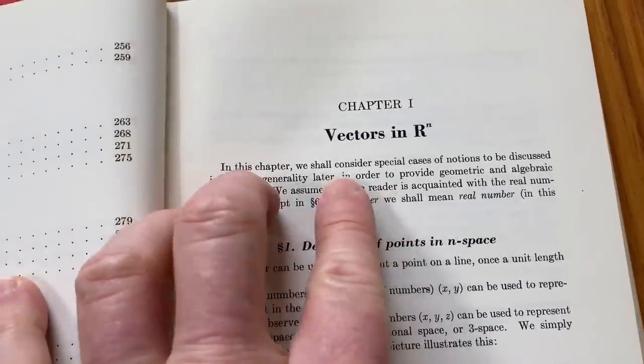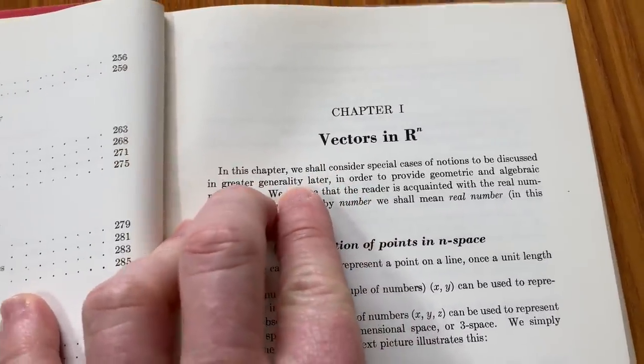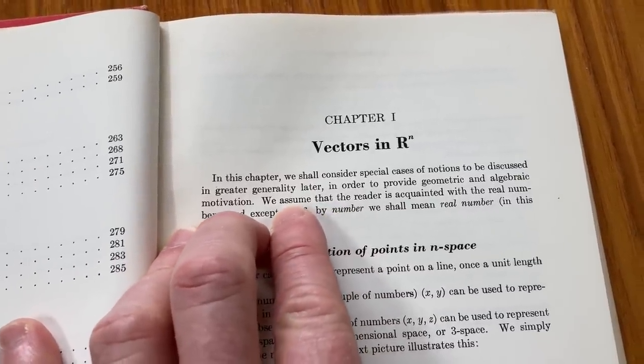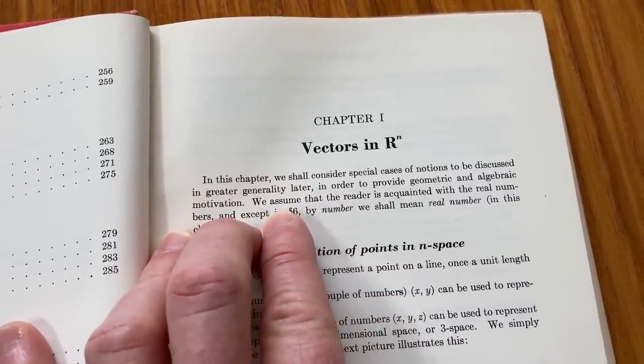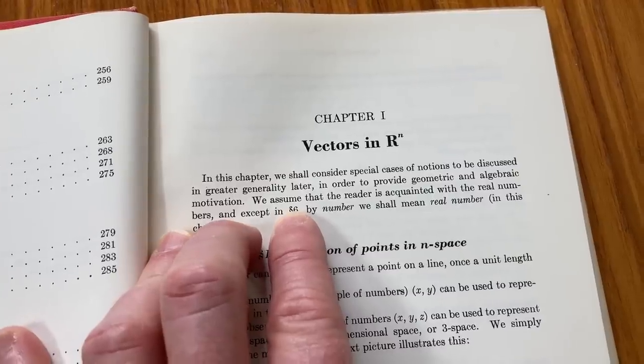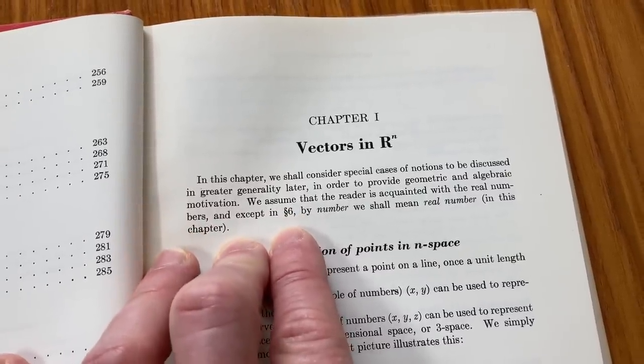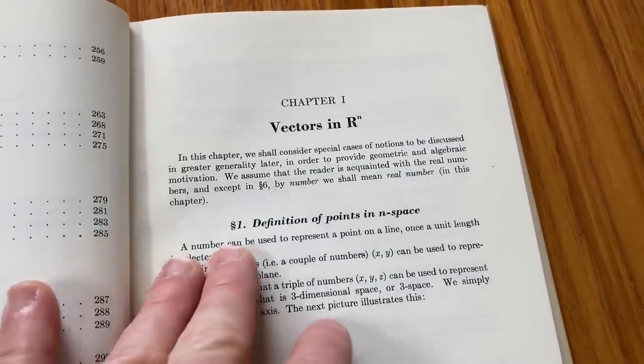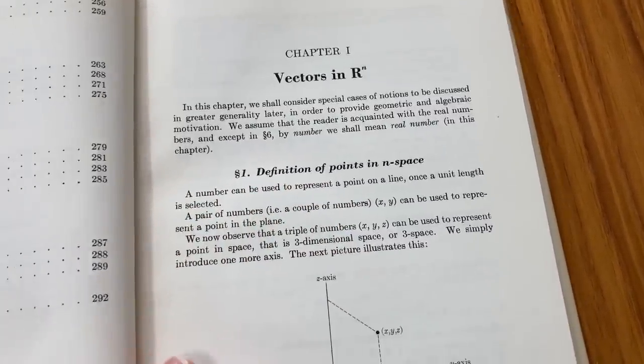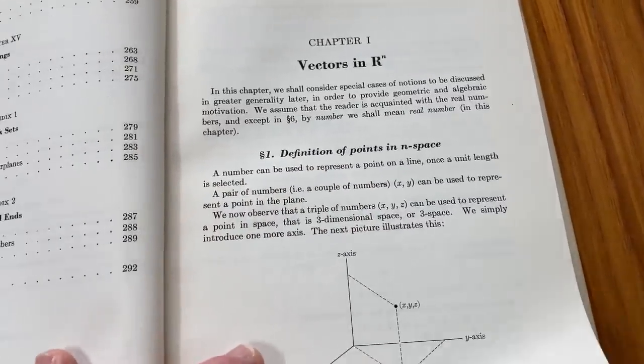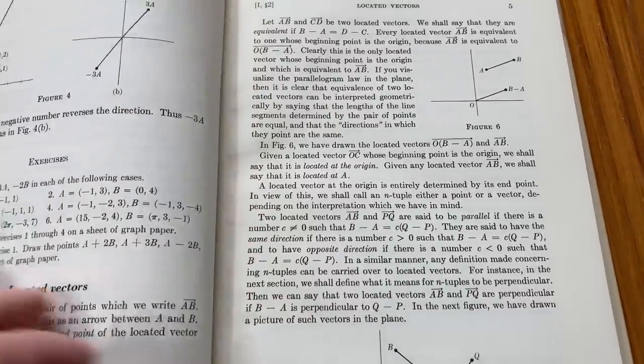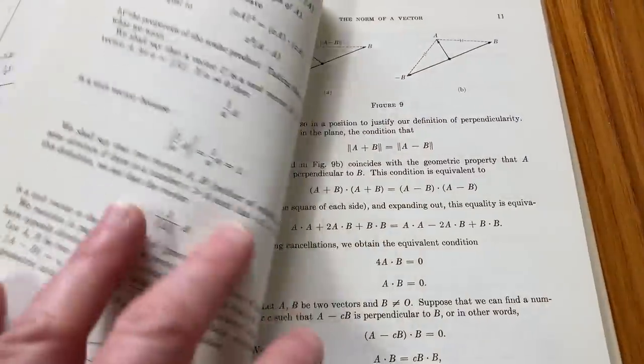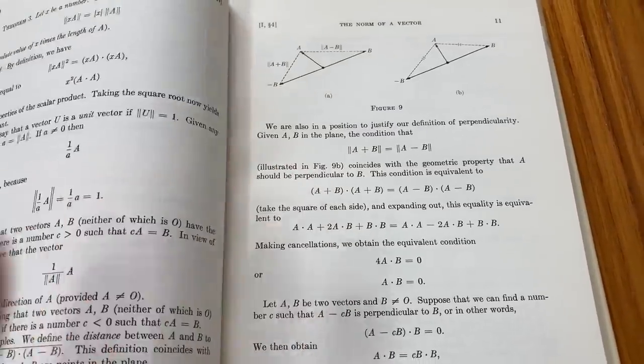This is the very first chapter, vectors in R^n. It says: In this chapter, we shall consider special cases of notions to be discussed in greater generality later in order to provide geometric and algebraic motivation. We assume that the reader is acquainted with the real numbers. It starts by defining points in n space. It gives you some nice examples. I feel like the readability of this book is very high. It's very easy to read, and it reads quite well. Just a good book for reading.